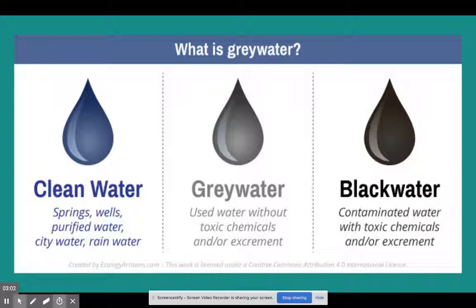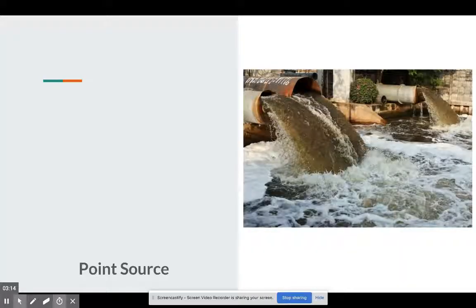Gray water is like the water used to wash your clothes in the washing machine or the dishwasher. You use soap, but there are no toxic chemicals and no human excrement. So we consider that gray water.